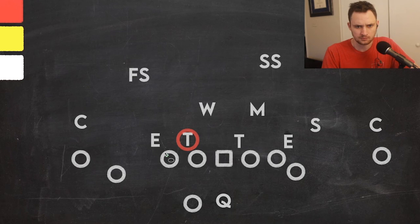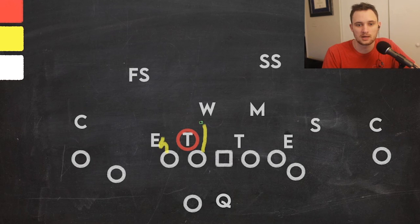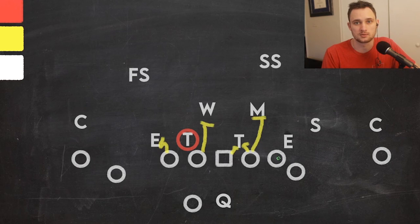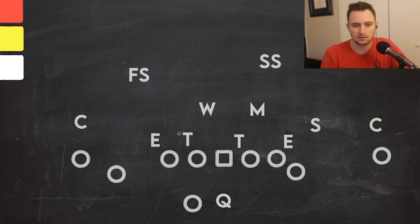For those interested in blocking schemes, the tackle blocks out, this guard works up to the linebacker, and it's regular zone blocking outside of that. He'll probably double on this tackle before working up to the Mike linebacker. The quarterback reads this tackle instead of the end.